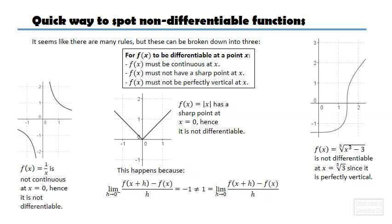These are the conditions for a function to be differentiable at a point x. Now, exercises are really not that difficult. You just have to make sure that you don't have a sharp point that is not perfectly vertical and that it's continuous. And then you can happily say that it's differentiable. Let's go and deal with some exercises. Thank you very much for watching. Goodbye.